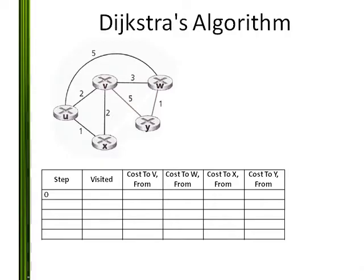Pathfinding: We use Dijkstra's algorithm to find the shortest path to all destinations from the source. The source is the current location of the robot. The Dijkstra's algorithm initializes all nodes as infinity. Let's say I start at node U.